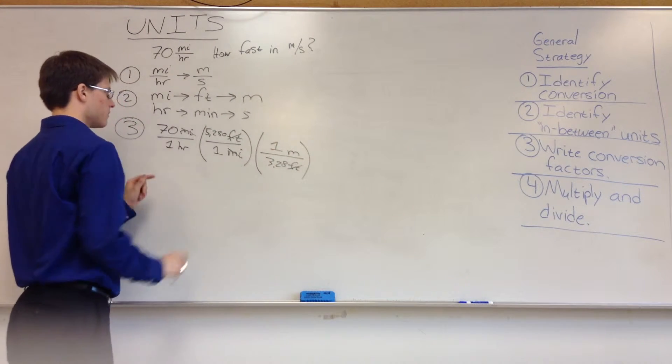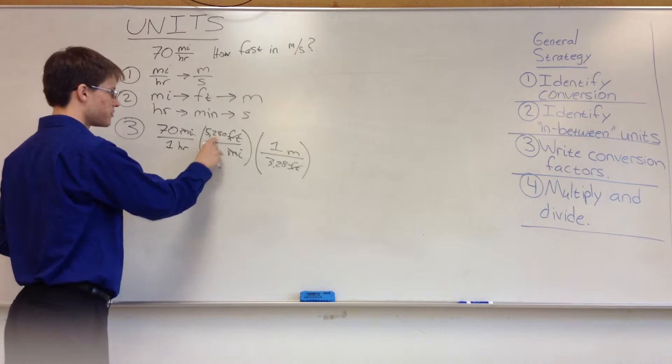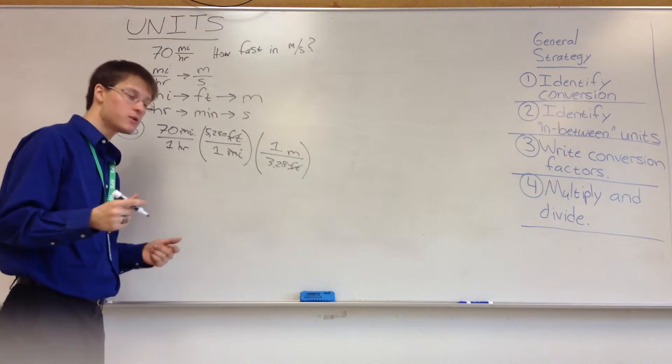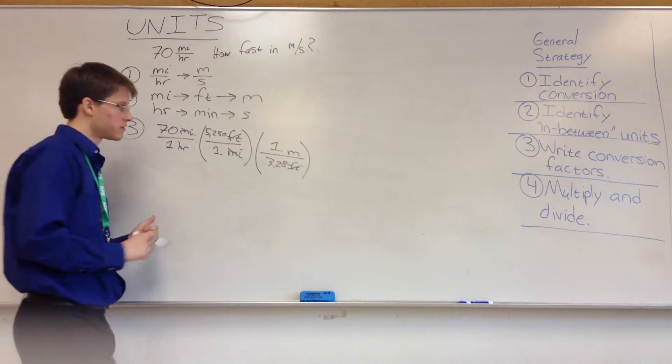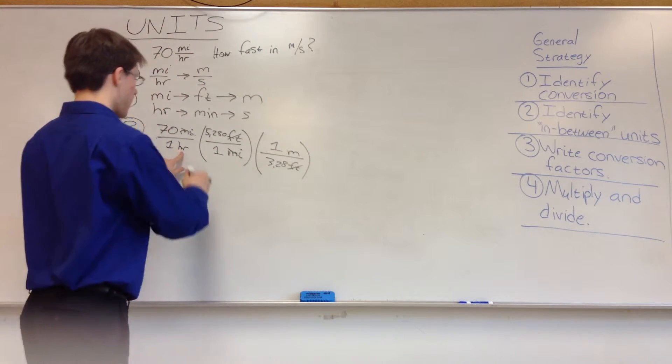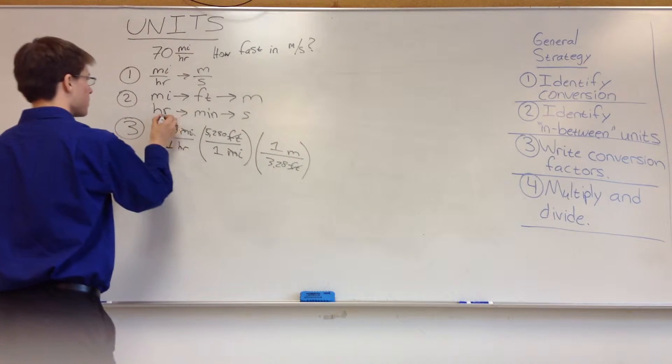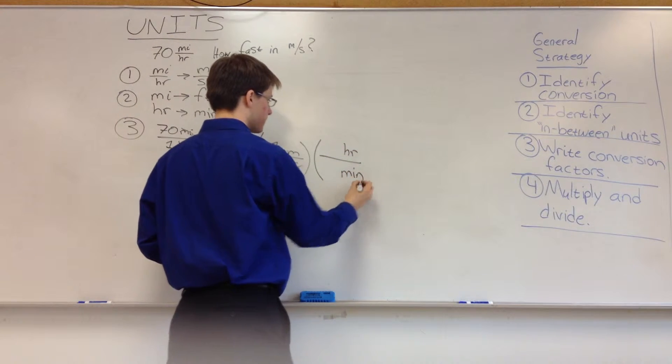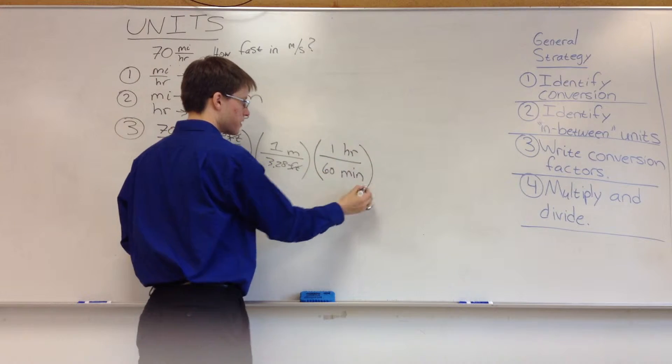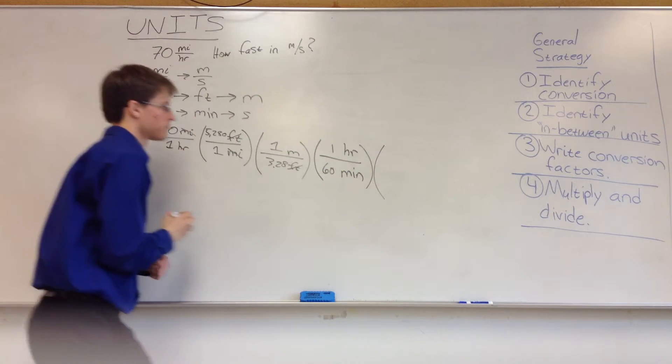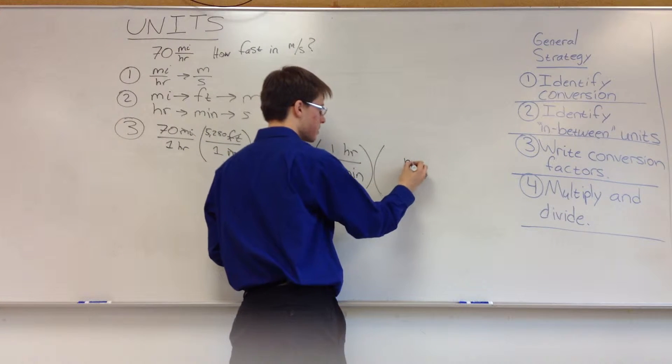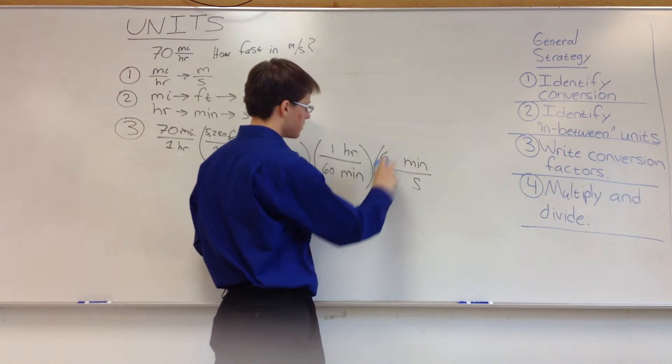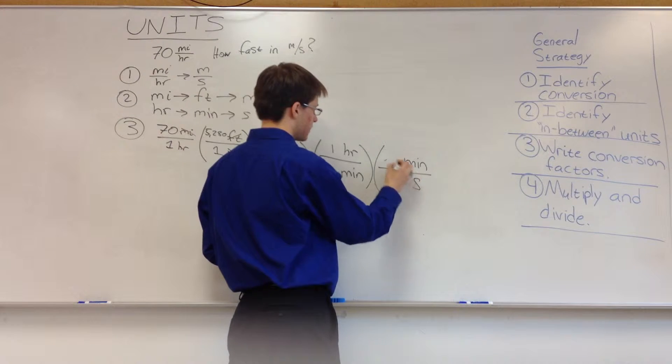And right now we have meters per hour. And if you calculated this out, if you went to step 4 and multiplied, and you just had 70 times 5280 over 3.28, you'd get meters per hour. We want meters per second. And it turns out you can just tack on the conversion factors for hour to second on the end of this line. So let's do that. Here, hour is actually on the bottom. So in order to get from hours to minutes, you need to put the hour on the top here. And minutes will go on bottom. And there's one hour for every 60 minutes. And then the next conversion factor gets from minutes to seconds. So in order to cancel out this minute, minute needs to be on top. And then seconds is on the bottom. So we know there are 60 seconds for every one minute.